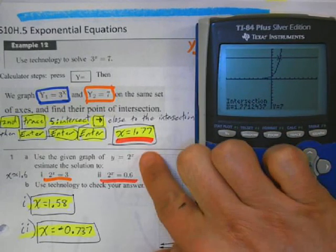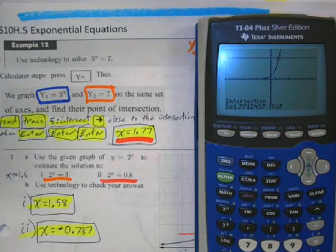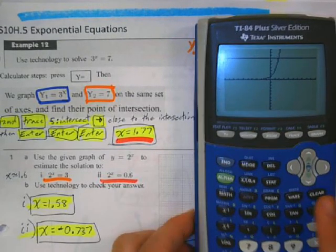And now it tells me the intersection is 1.77. Remember, three significant figures. Same process for all of these.